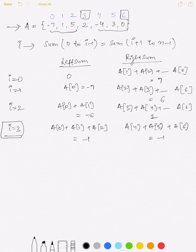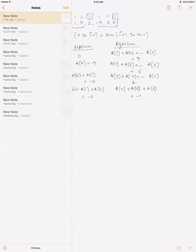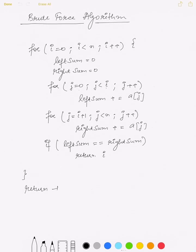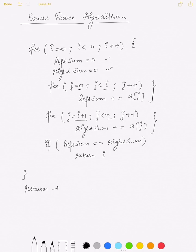Let's check the pseudo code. We have taken two variables, left sum and right sum, to find the left and right parts of the sum. In the first loop we calculate the left sum from index 0 to i, and in the next loop we calculate the right sum from index i+1 to n. Then we check if both are equal and if so, return the equilibrium index. The time complexity for this algorithm is O(n²) because for every index we need to traverse the complete array.